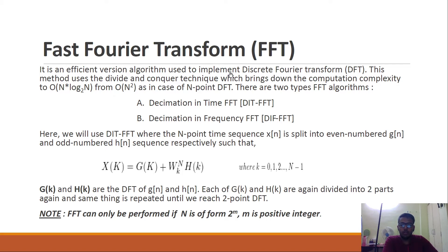This can be done in two ways: decimation in time FFT and decimation in frequency FFT. In this experiment we are going to use DIT-FFT for an N-point sequence where X[n] is split into even-numbered G[n] and odd-numbered H[n]. If we take the frequency spectrum of this, we can write that X[k] equals G[k] plus W_N^k into H[k], where G[k] and H[k] are the DFT of G[n] and H[n] respectively. Each G[k] and H[k] are again divided into two parts and the same thing is repeated until we reach a 2-point DFT. FFT can be performed only if N is a power of 2, because in every step we divide the signal length by 2.